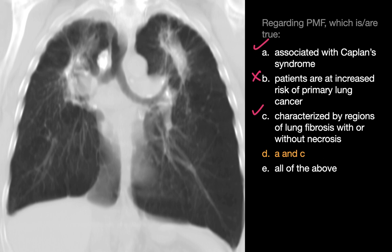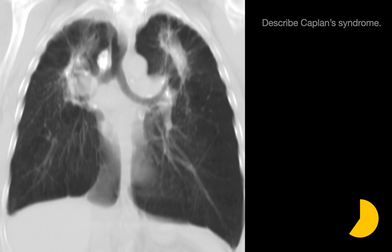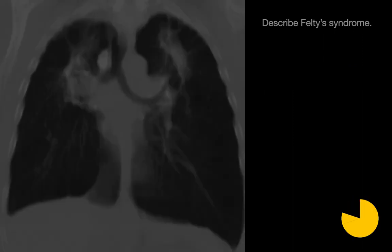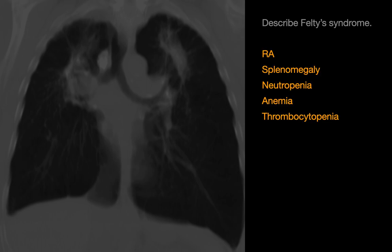Let's talk about Kaplan syndrome — describe it. Kaplan syndrome refers to the combination of rheumatoid arthritis and coal workers' pneumoconiosis. Oftentimes we may see discrete nodules of one to five centimeters in these folks. In prior experience, folks occasionally confuse Kaplan syndrome with Felty syndrome. But Felty syndrome refers to the combination of RA, splenomegaly, neutropenia, anemia, and thrombocytopenia. Make sure we can remember the differences between Kaplan and Felty and not confuse the two.